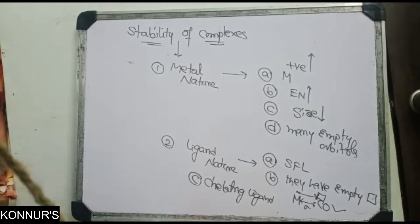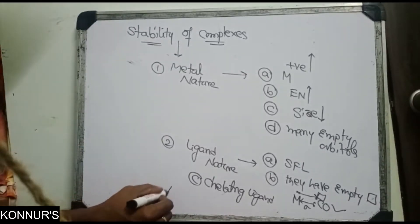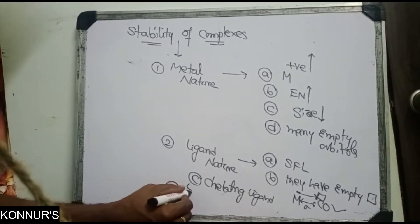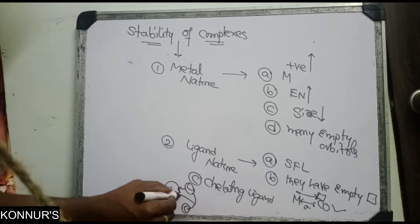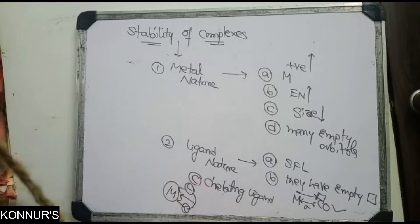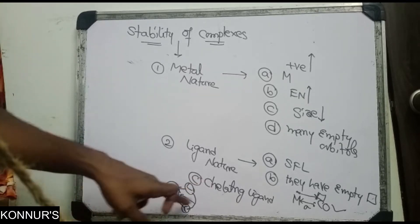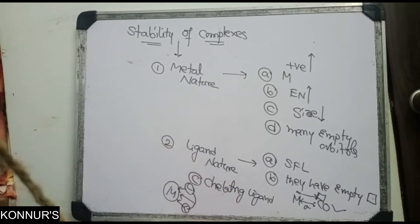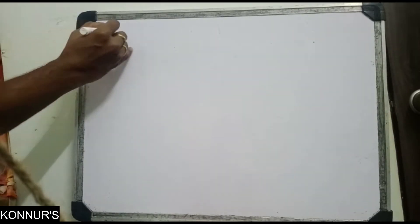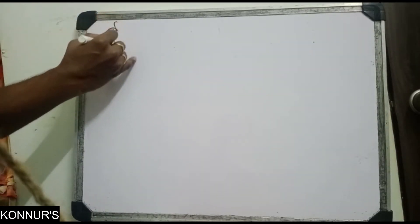When a double bond forms between metal and ligand, stability increases. Next, chelating ligands — where one ligand combines with the metal through many bonds — also increase stability. This is called chelation, and chelation increases the stability of the complex.